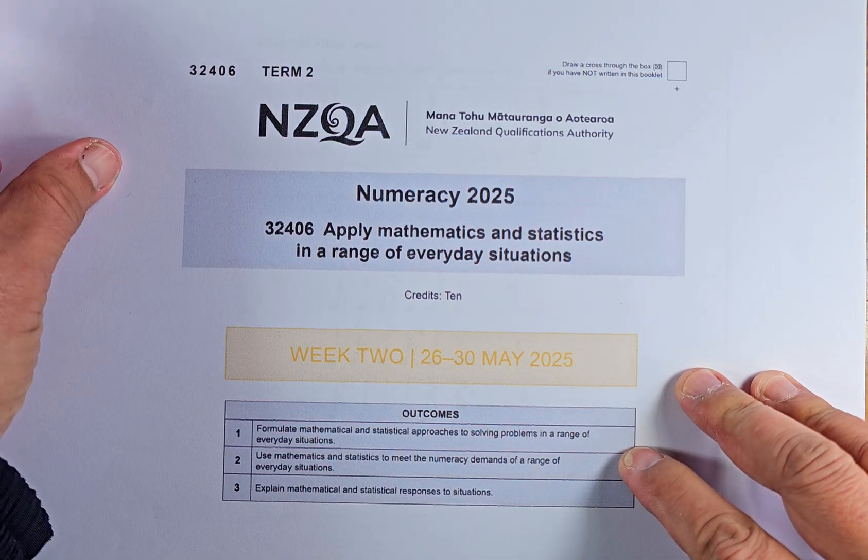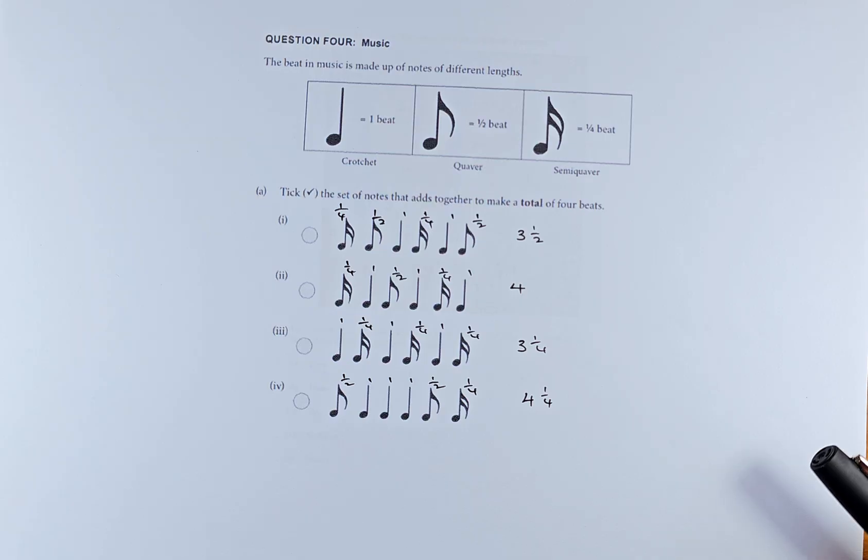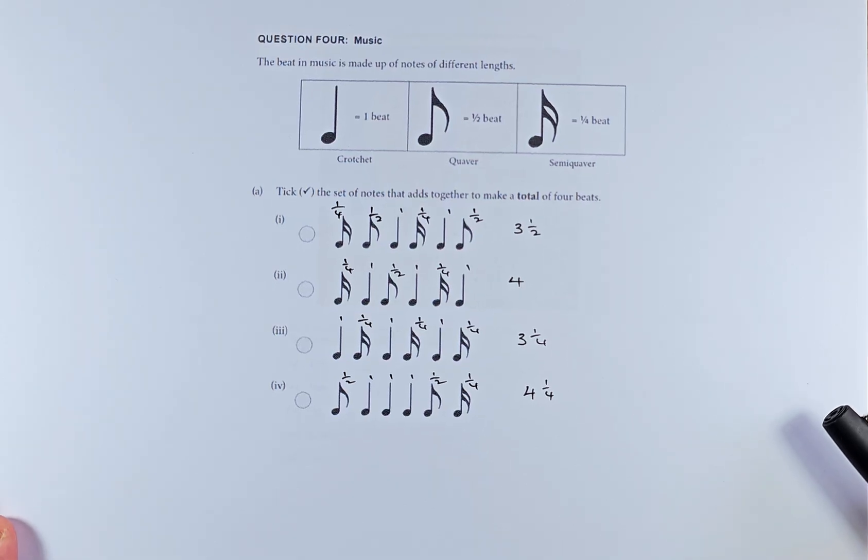So question 4 sounds like this. The first question, 4A, is a music question. So we're going to solve the question now. The beat in music is made up of notes of different length. This is 1 beat, this is half beat, this is a quarter beat.